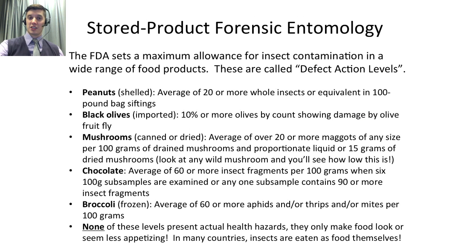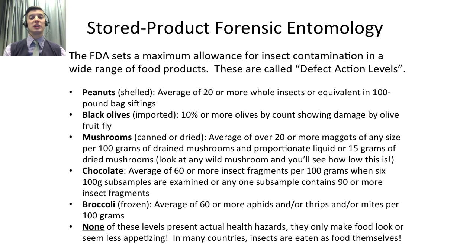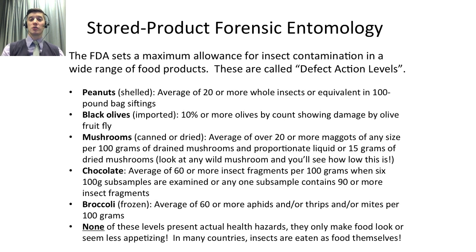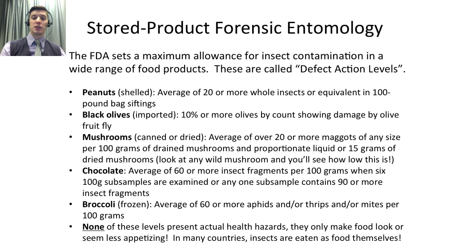The FDA sets a maximum allowance for insect contamination in a variety of food products. In a 100-pound bag of peanuts, if you have 20 whole insects, that can still pass — if you have 21, it's not okay. That's actually pretty reasonable given that 100 pounds is a lot of peanuts. Imported black olives — the kind sliced on your pizza — can have up to 10% showing damage from fruit fly maggots before the FDA says you can't use them. Mushrooms are even worse; you can have up to 20 or more maggots of any size in 100 grams of canned mushrooms. But again, they're not going to hurt you.